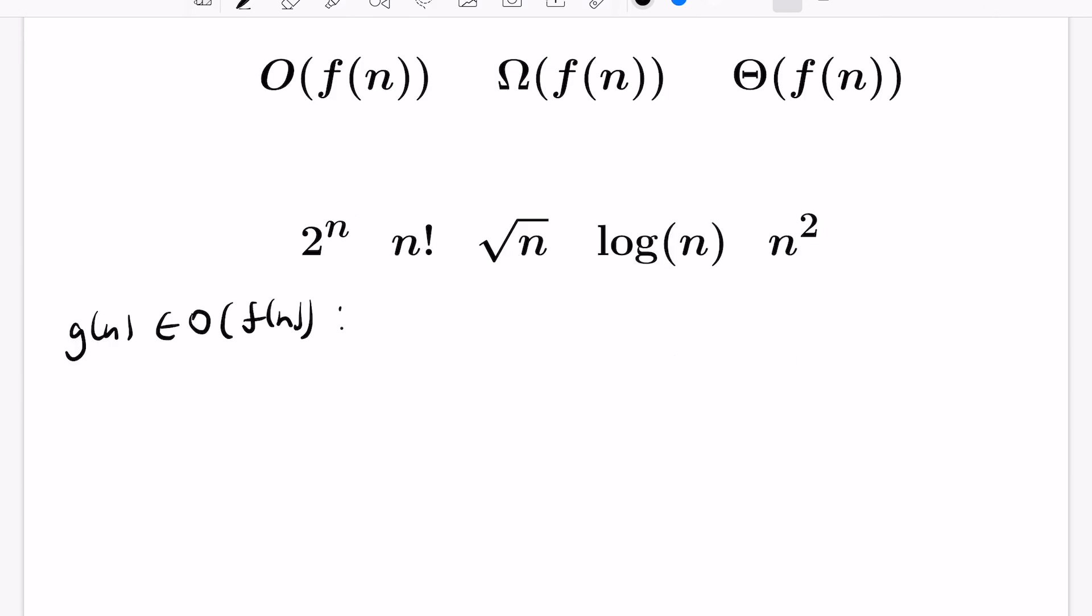So how we can state this concretely is there is a constant greater than zero and a natural number n naught so that n being large enough, meaning n being greater than or equal to n naught, means that the absolute value of this g function is dominated by the function f. And the control on how much is dominated by is governed by this constant c. But it is a constant overall.